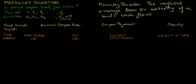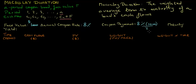Let's take an example. Suppose we have a bond with a base value of $1,000. This bond pays semi-annual coupons with an annual coupon rate of 8%, so that each coupon payment is 8% of the base value of $1,000 divided by 2, which is the number of times the coupon is paid out in a year, and this equals $40. The maturity of this bond is 2 years, and the yield on this bond is 10% per annum with semi-annual compounding.